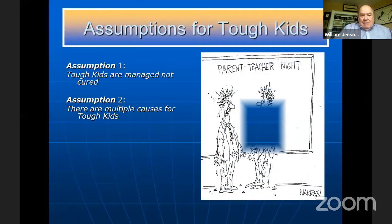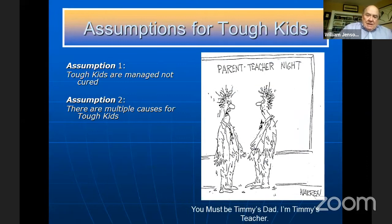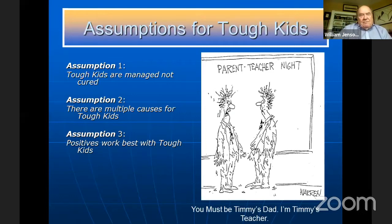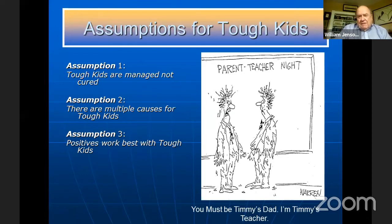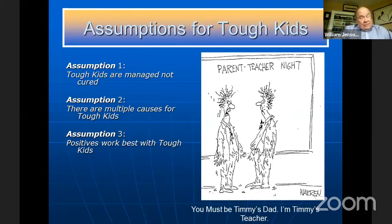This is my favorite cartoon — it's parent-teacher conference night, and both the parent and teacher are shredded. One says, 'Oh, you must be Timmy's dad — I'm Timmy's teacher.' That's pretty much how it works most of the time. Assumption number three: positives work best with Tough Kids. Aversives have been tried and overused. Tough Kids are three times immune to punishment, meaning it takes three times more before they start changing.